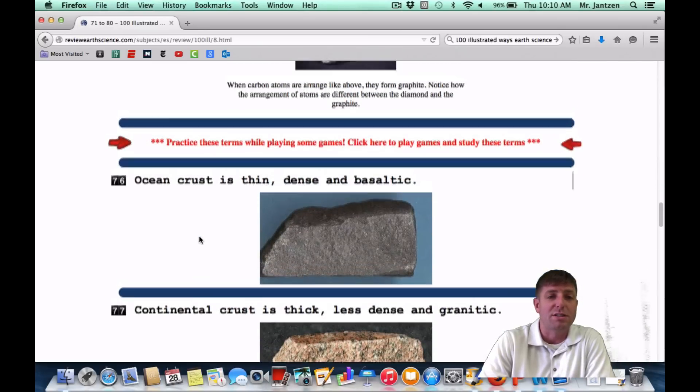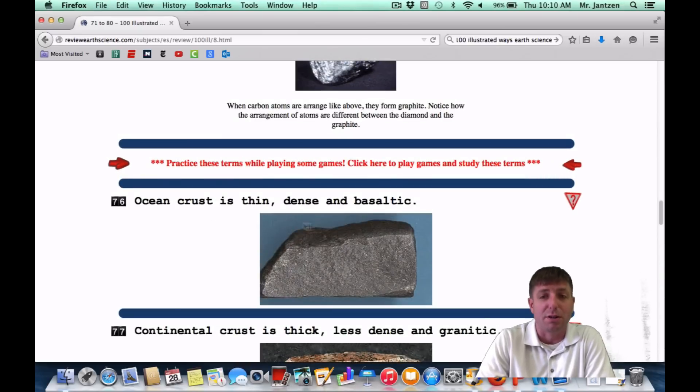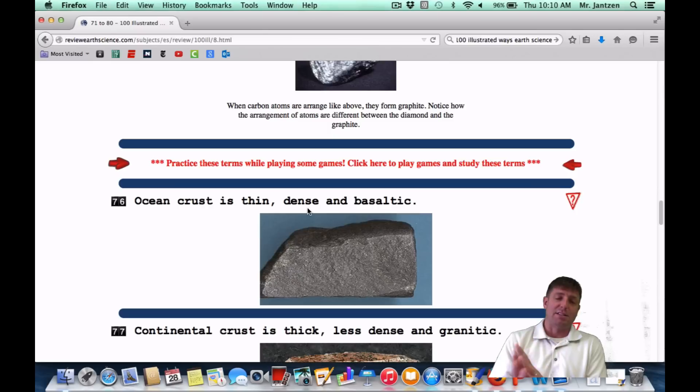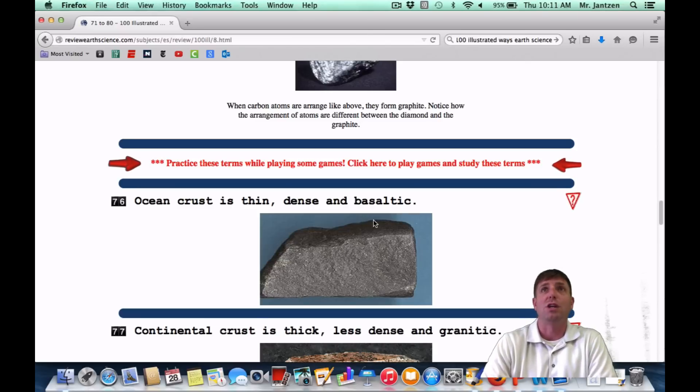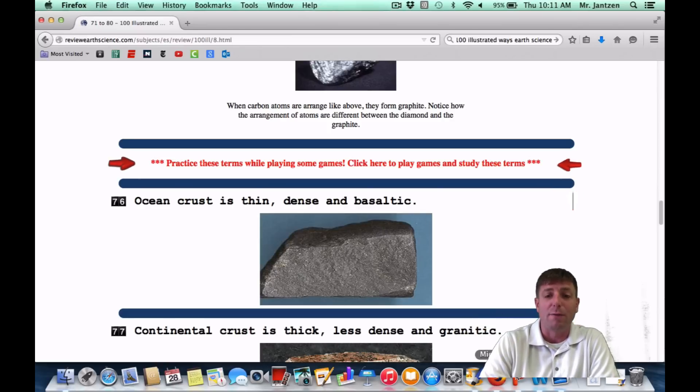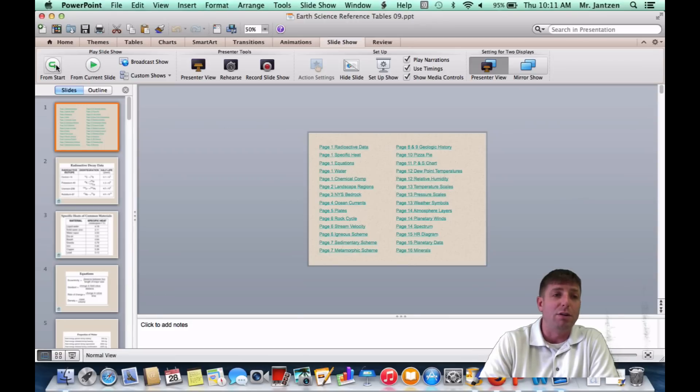Number 76, ocean crust is thin, dense, and basaltic. So once again, ocean crust is very dense. So if it's very dense, that means it's squished. So if it's squished, it's thin. And it's made of basalt. Those are the properties of basalt. In other words, you almost want to think of the continental crust sitting on top of the oceanic crust. The oceanic crust is more dense, so it's going to sit beneath it.